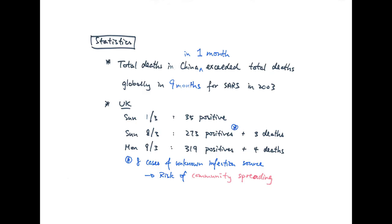Now let's look at the numbers in the UK. On the 1st of March, which was last Sunday, there were 35 confirmed cases in the UK. A week later, which was 8th of March, there were 273 confirmed cases plus three deaths. Today, as I make this video, is Monday 9th of March. As I film this video in the evening, there are 319 confirmed cases plus five deaths.